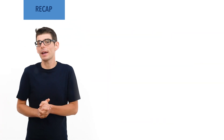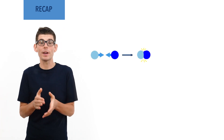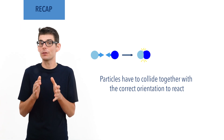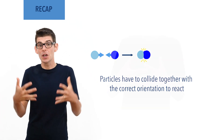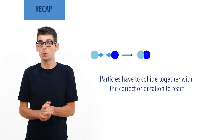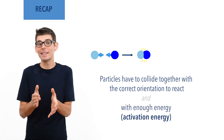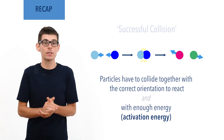In order for a reaction between two substances to occur, particles of each must collide together with the correct orientation. By correct orientation, we just mean they have to hit each other at the right angle — a bit like your hands have to collide in the right way to fit together. If a collision between particles happens with enough energy, the activation energy, and leads to the formation of new products, the collision is described as successful.